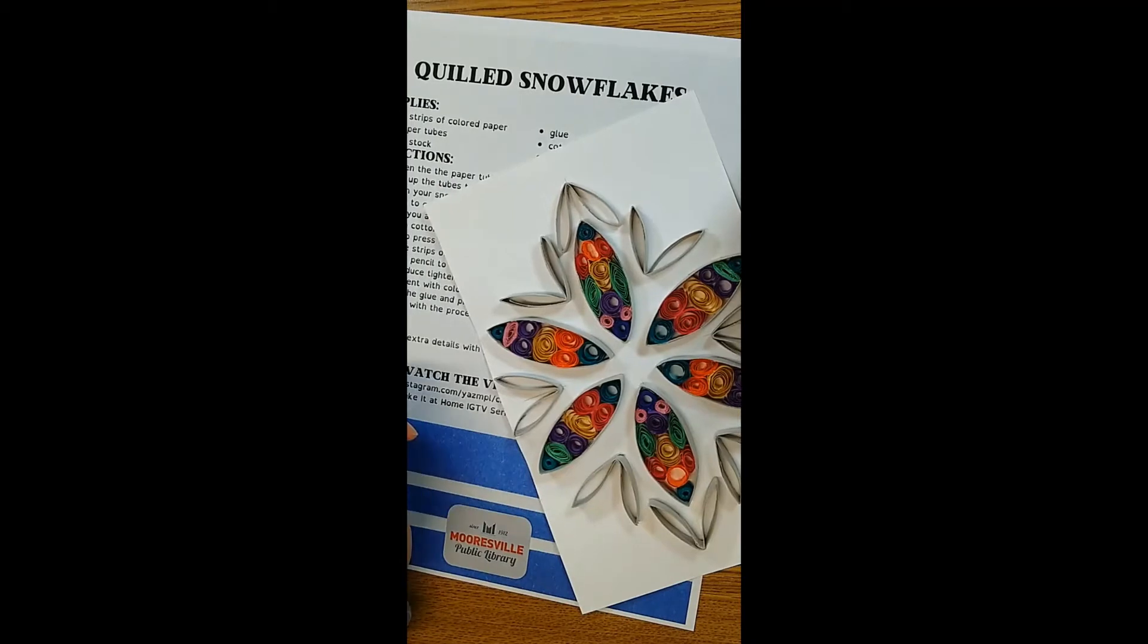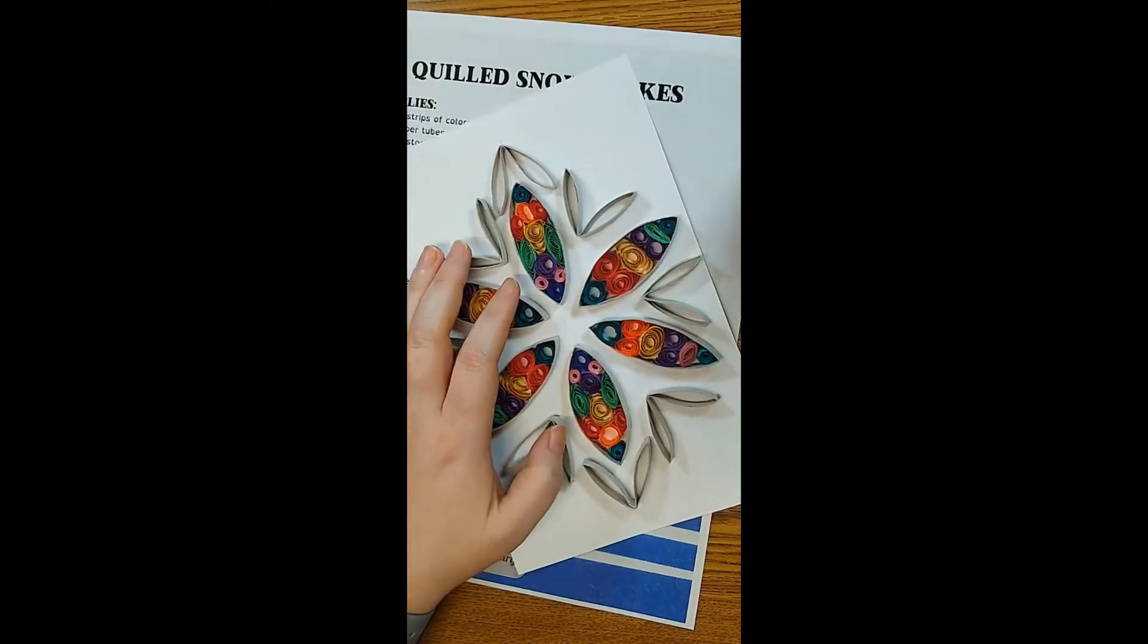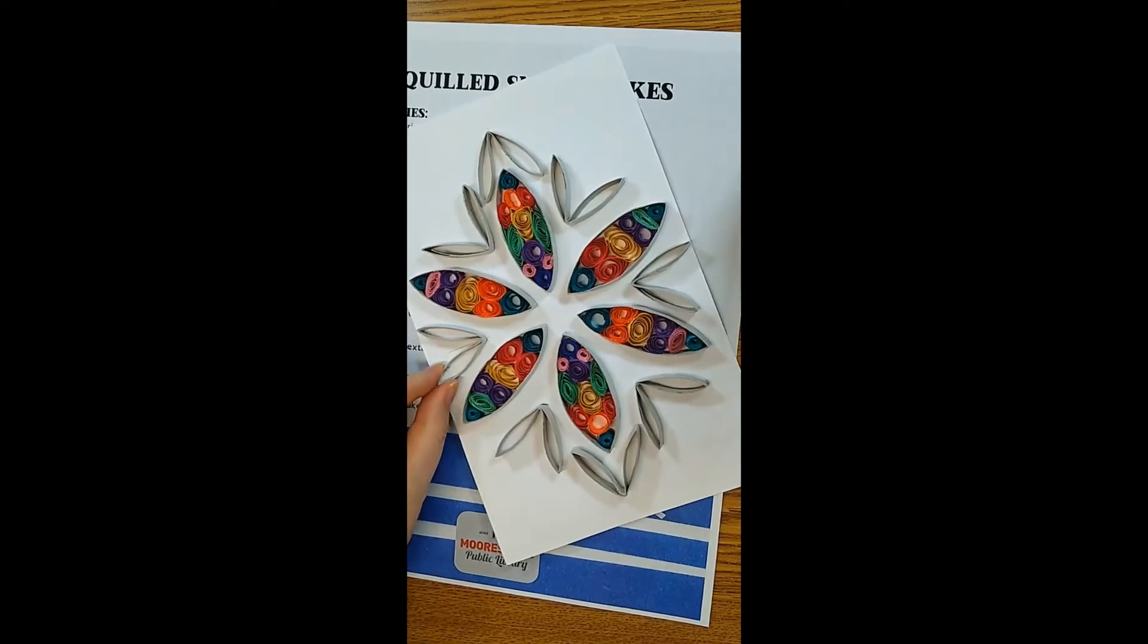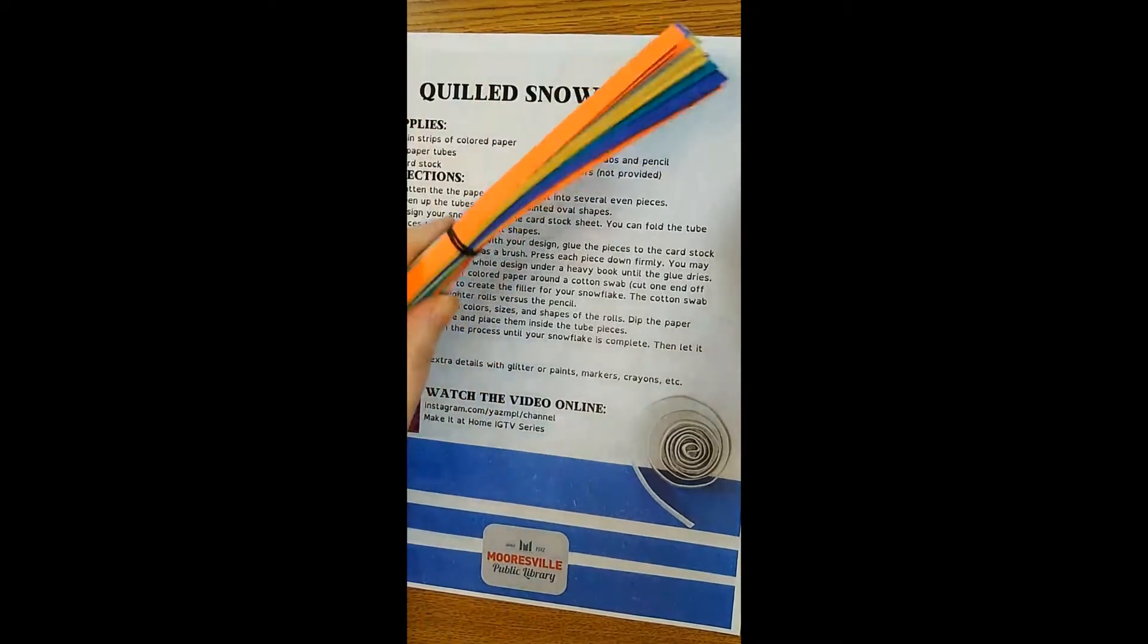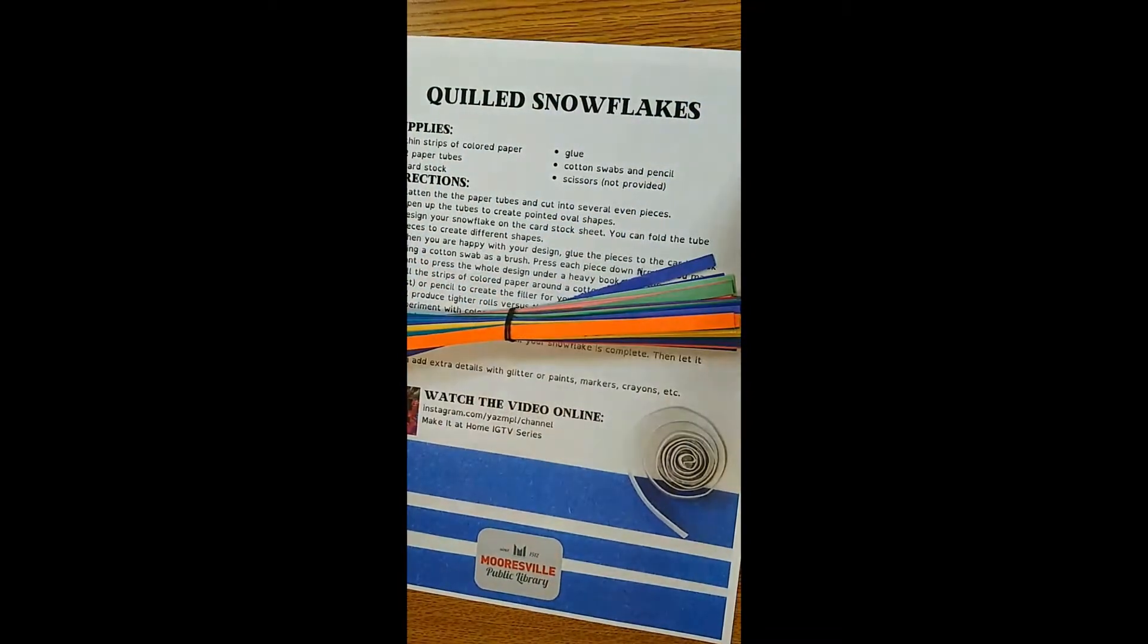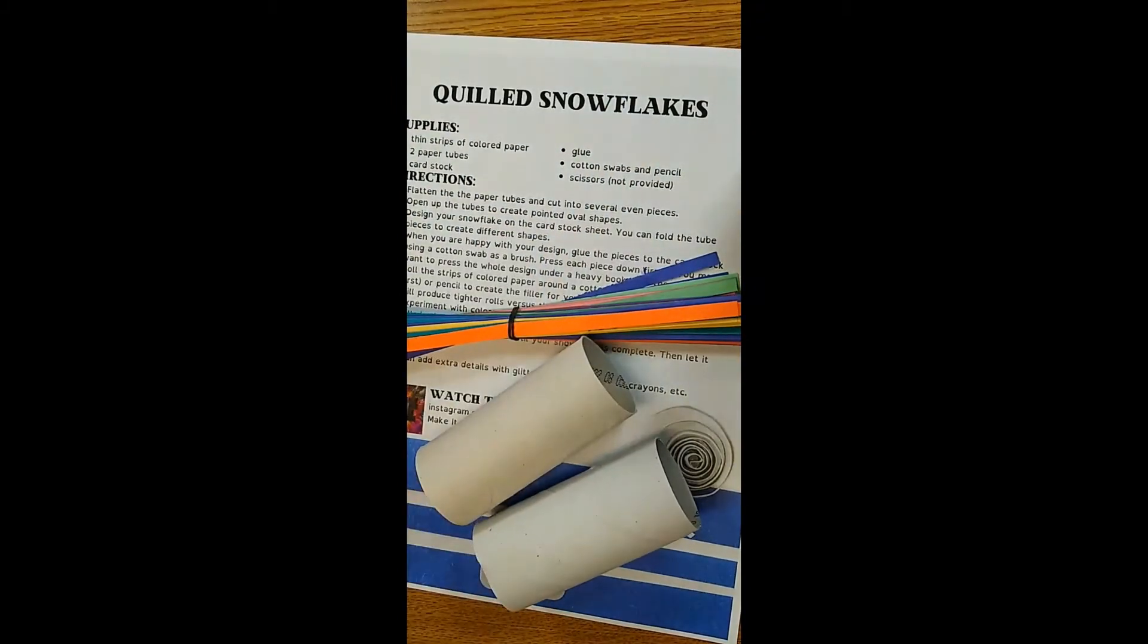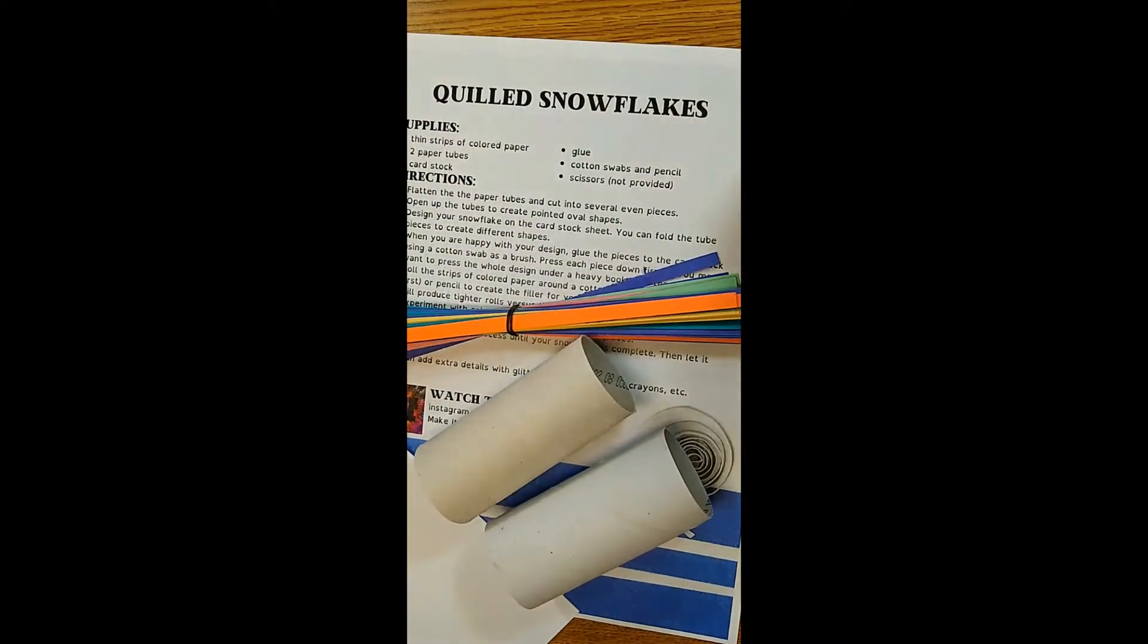All right, today we are making quilled snowflakes. So this is the finished product, and yours obviously will look different because it is your own personal snowflake to make. In your packet are strips of colored paper, two paper tubes, a half sheet of cardstock, and a container of glue.